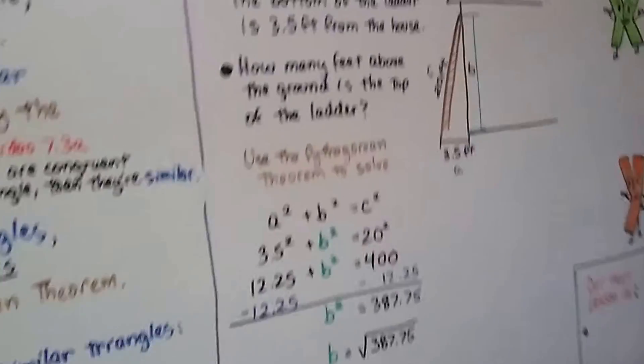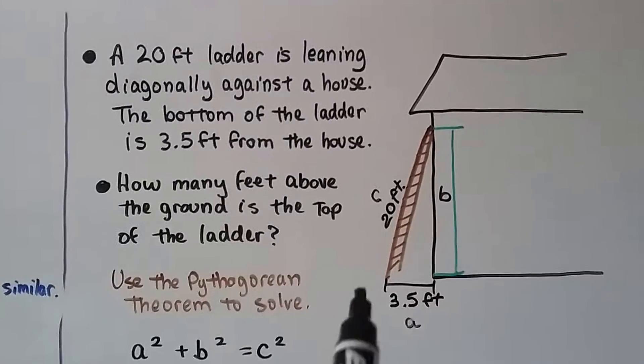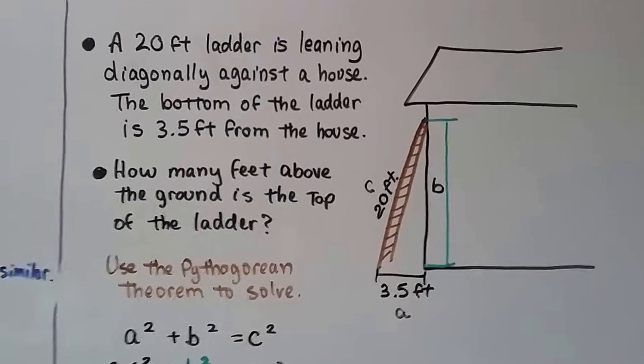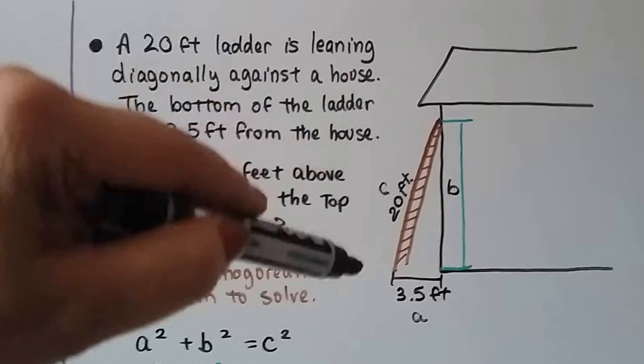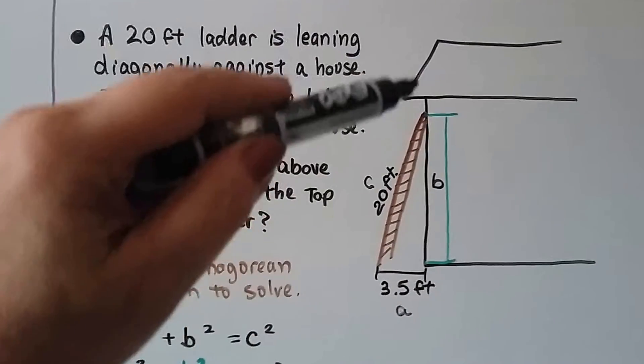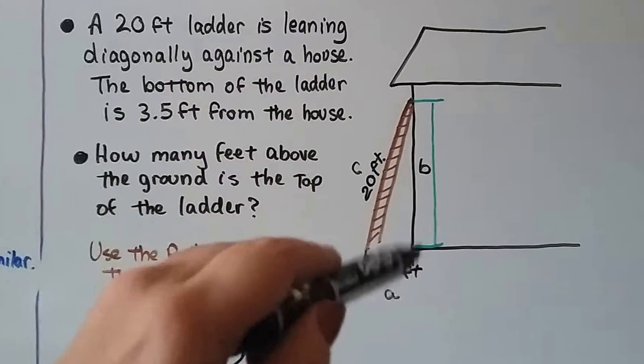So here we've got a regular problem. A 20-foot ladder is leaning diagonally against a house. And the bottom of the ladder is 3.5 feet from the house. So that'll be our A. And the 20-foot ladder is going to be our hypotenuse C. How many feet above the ground is the top of the ladder? So we don't want the whole house. We just want where the top of the ladder is to make that triangle.